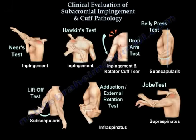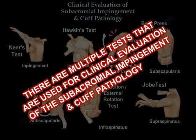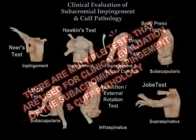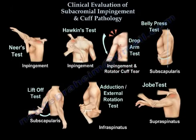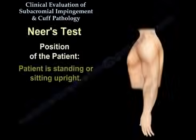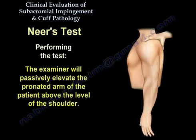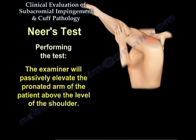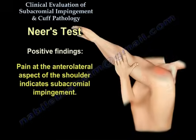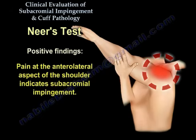There are multiple tests used for clinical evaluation of subacromial impingement and cuff pathology. We start with the Neer test. The patient is standing or sitting upright. The examiner will passively elevate the pronated arm of the patient above the level of the shoulder. Pain at the anterolateral aspect of the shoulder indicates subacromial impingement.